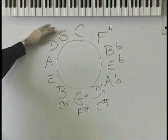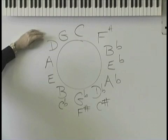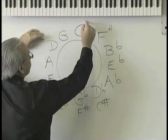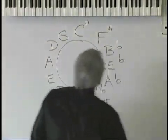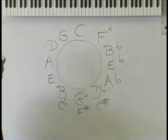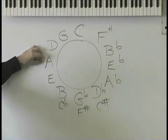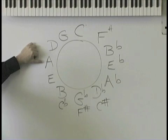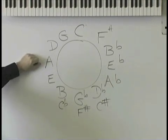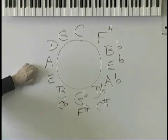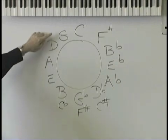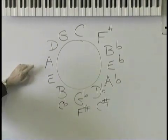Two sharps, key of D. The names of the sharps are F and C. Key of A — how many sharps? Three. No sharps is key of C, G is one, D is two, A is three. The names of the three sharps are F, C, and G. Just go to the F and then go back, just like you did with the flats.